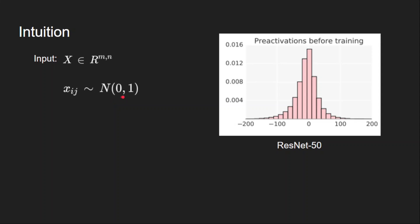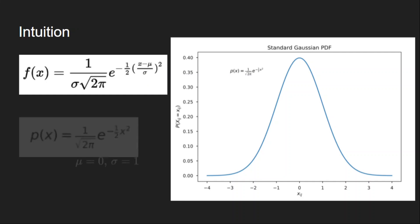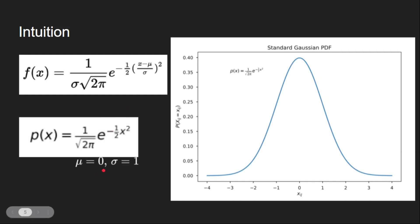Each input feature in x is a random variable from the normal distribution with zero mean and standard deviation of one. This can be visualized using the probability density function. This is the general formula for normal distribution with sigma and mu, but when we take zero mean and unit standard deviation it simplifies accordingly.